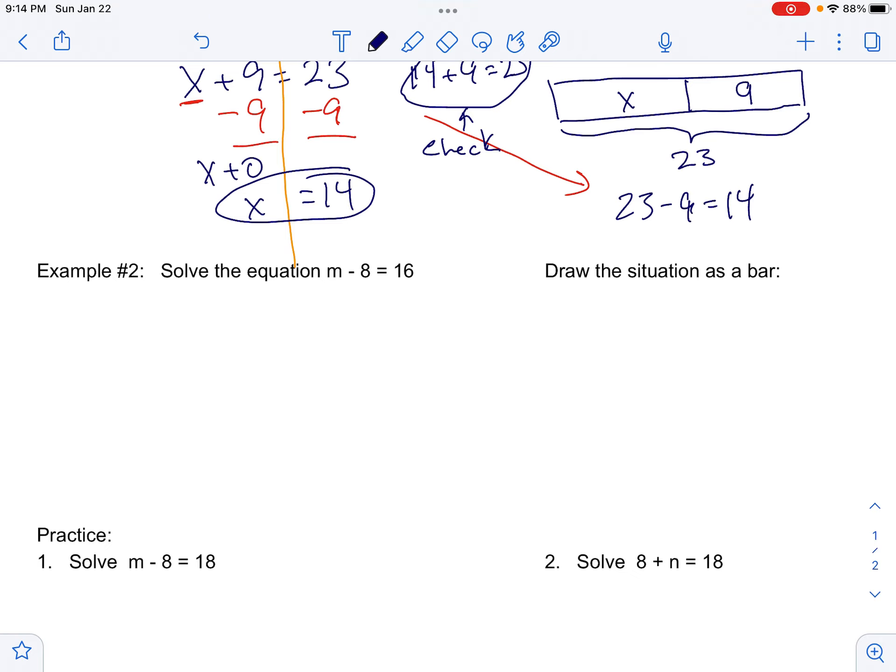Now the second example: m minus 8 equals 16. What does that mean? That's the idea that we have some total piece, and we're going to take 8 away. We have a total piece here, we're going to take a chunk of 8 away, and what's left is going to be 16. The total length now is m.